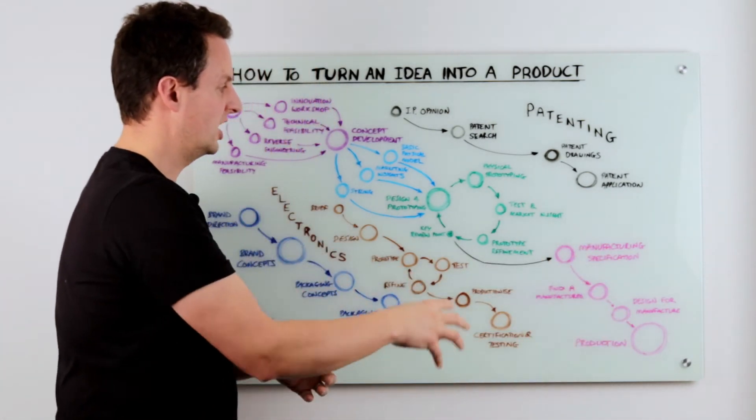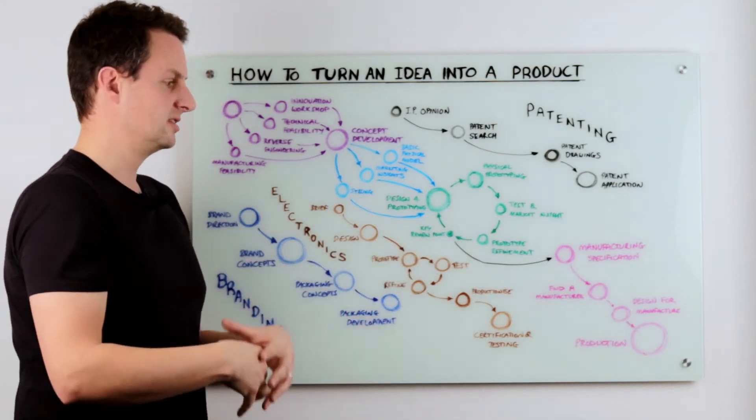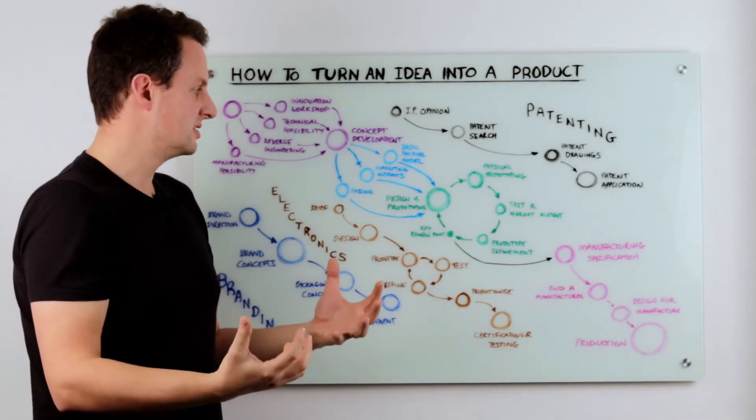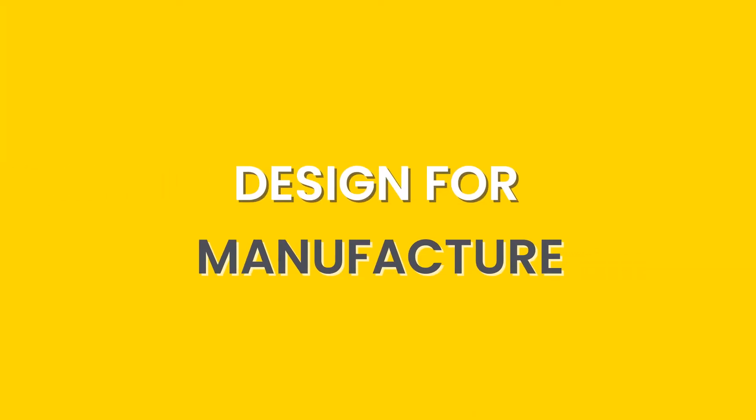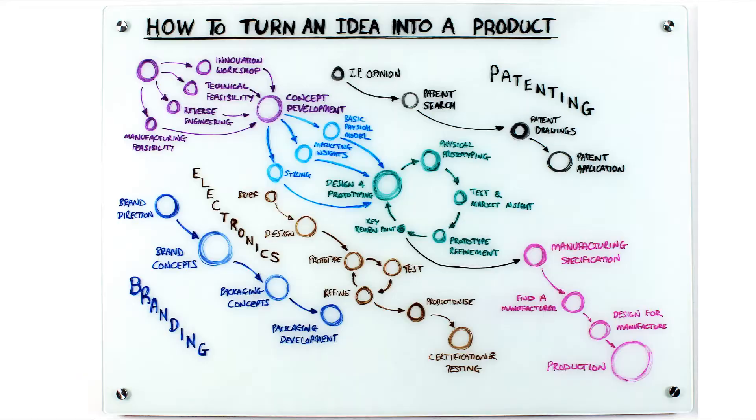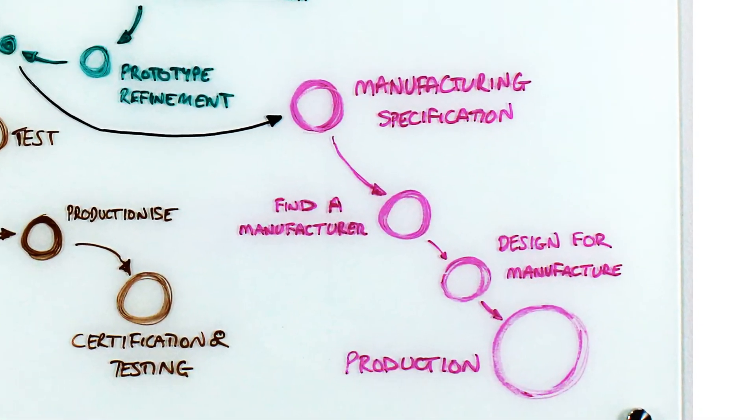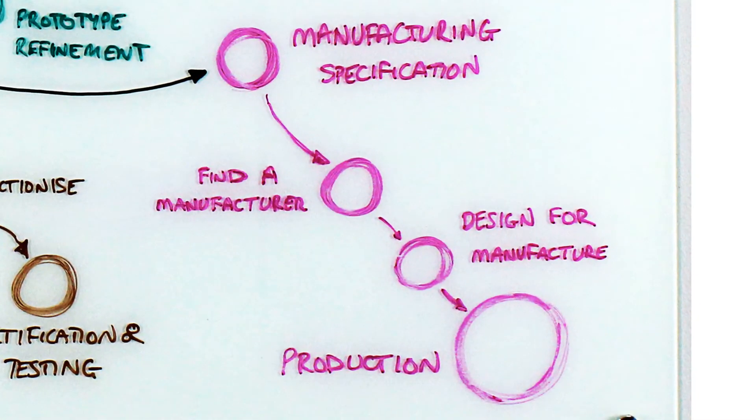Now these stages really are where you take this prototype that's developed and tested and is the right solution and you're preparing it for manufacture. So you probably want to find a manufacturer, create a manufacturing specification, finalize the design, refine it where possible to make it more cost-effective for mass production, and then you'll be ready to go into production.